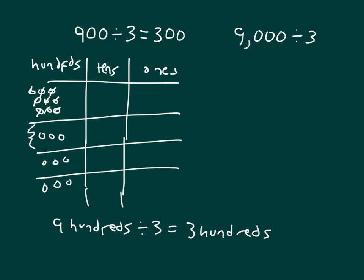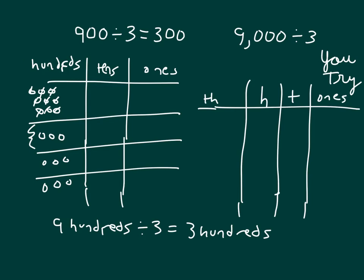Could you do this one on your own? Pause the video while you do your work. We have a thousands place, hundreds, tens, ones. And if we look at this number, all we have is a 9 in the thousands place. So first, you should have made 9 disks to represent the 9 thousands that are in that number.